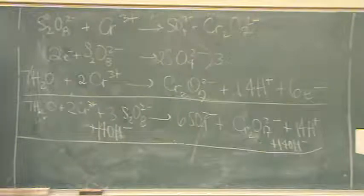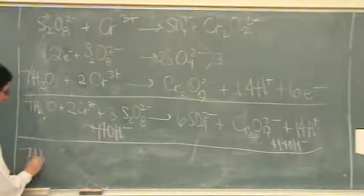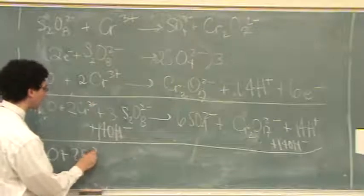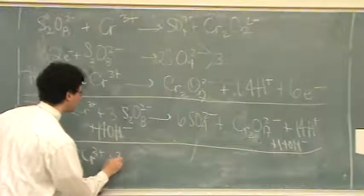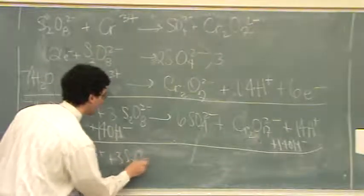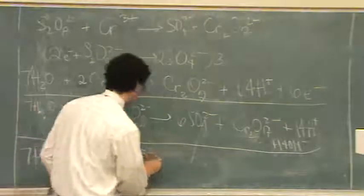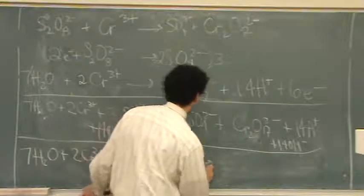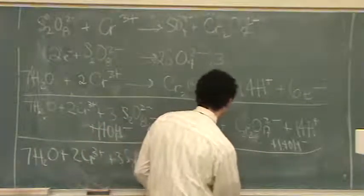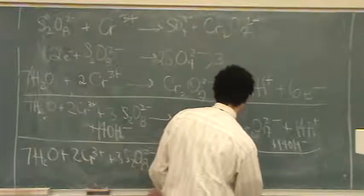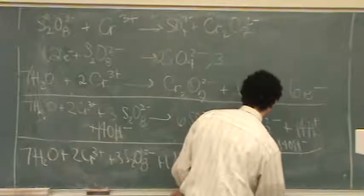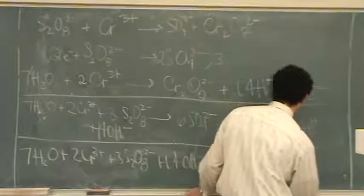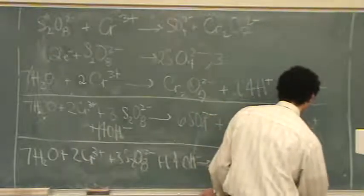And so on the right hand side, nothing much happens. 7H2O plus two chromium three plus, plus three S2O8 two minus, plus 14 OH hydroxide ions. On the right hand side, six sulfate ions, plus the dichromate still there. And then we have 14 waters.